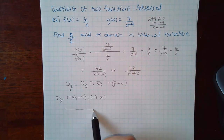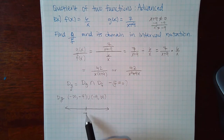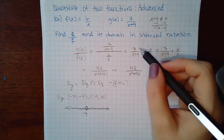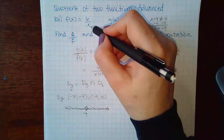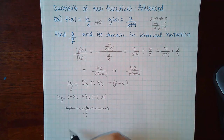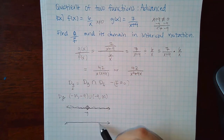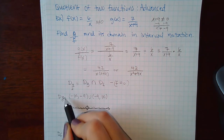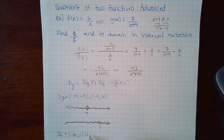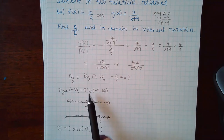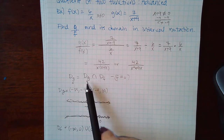For the domain of f, the denominator x cannot equal 0. So the domain of f is (−∞, 0) union (0, ∞) — everything but 0. Finding the intersection of these two graphs means anything missing from one is also missing from the other, so both −9 and 0 are excluded.